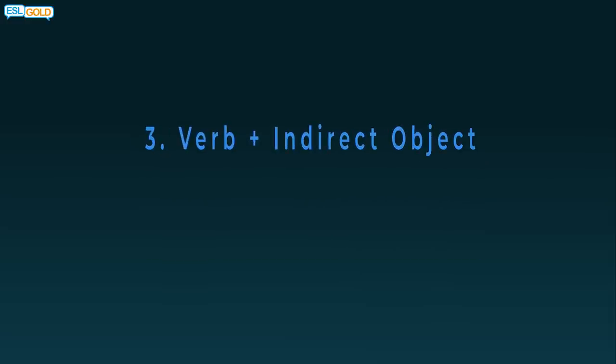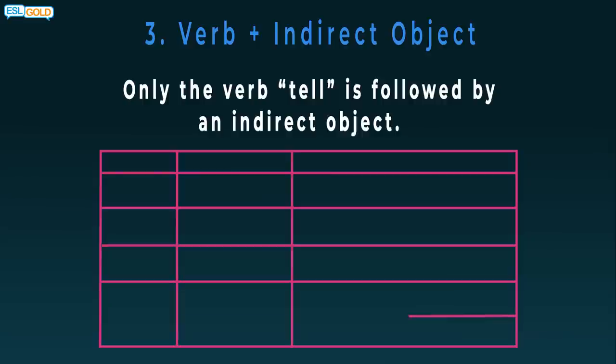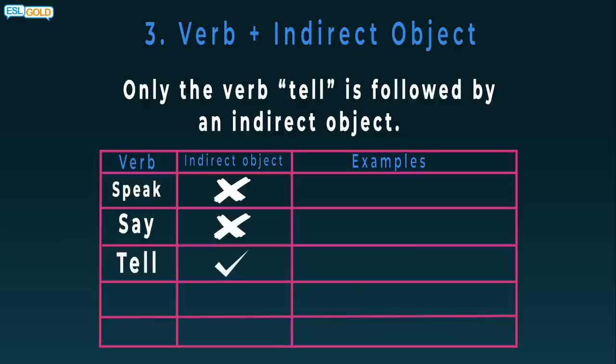Verb plus indirect object. Only the verb tell is followed by an indirect object. Speak: no. Say: no. Tell: yes. Tell me a story, but don't tell me a lie. Discuss: no. Talk: no.